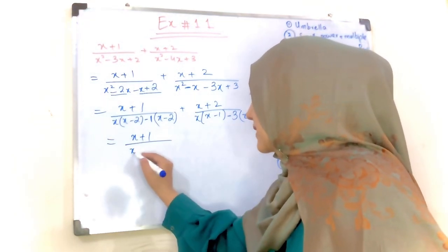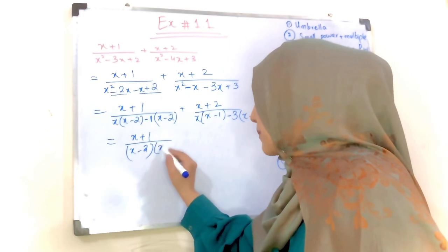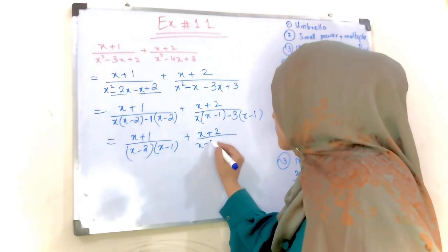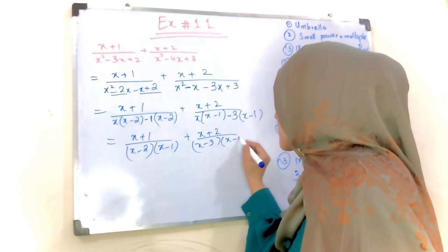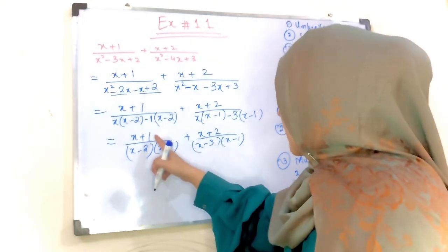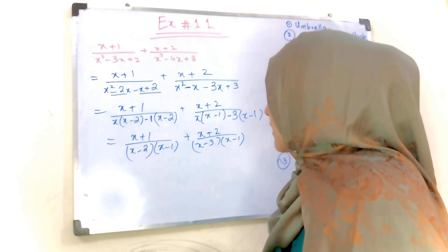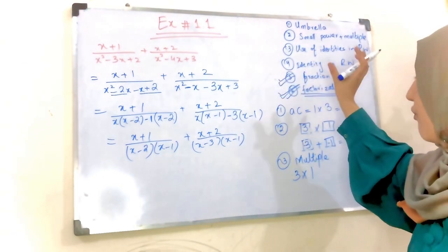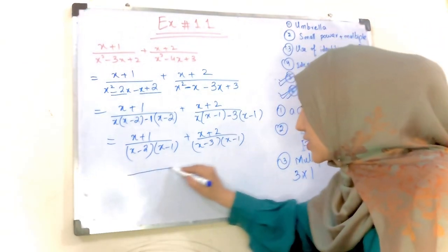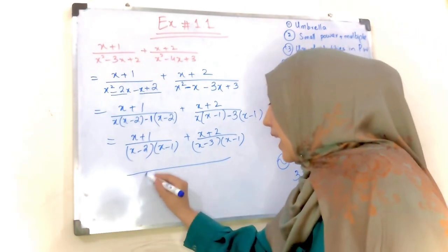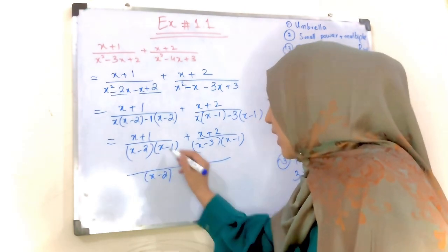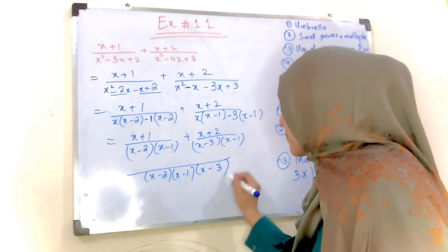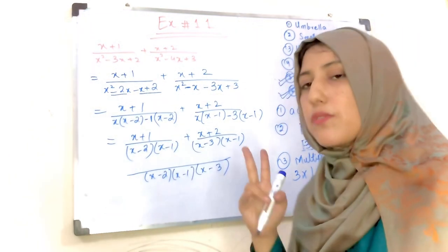Yahan is ke baad minus 2 aayega, is ke baad minus 1 aayega — x plus 2, x minus 3, x minus 1. Is ke baad hum fifth procedure ko follow karte hain — fraction. Fraction kaise karte hain: (x minus 2)(x minus 1) over (x minus 3)(x minus 1)(x minus 1).